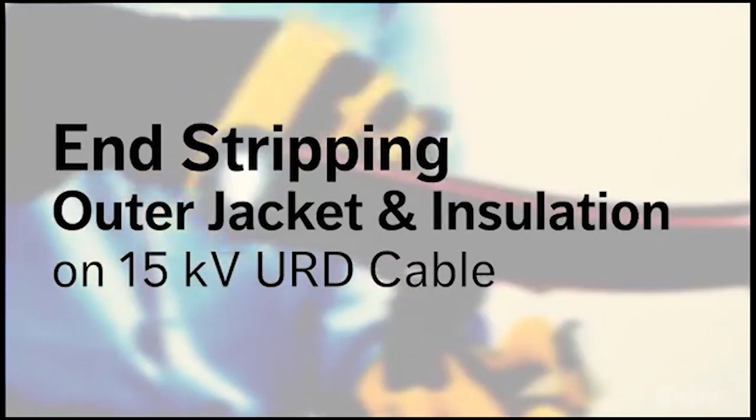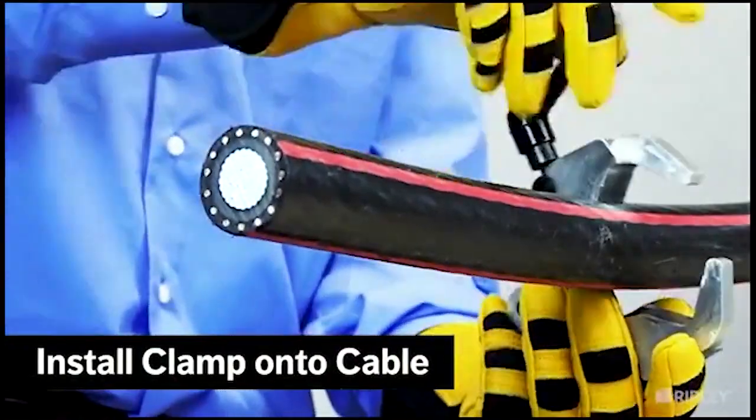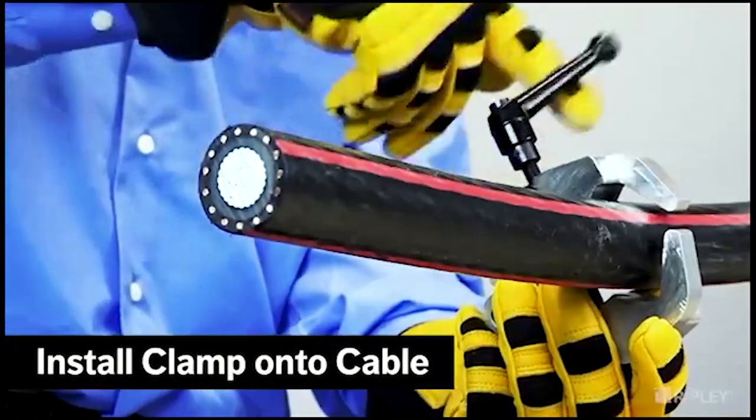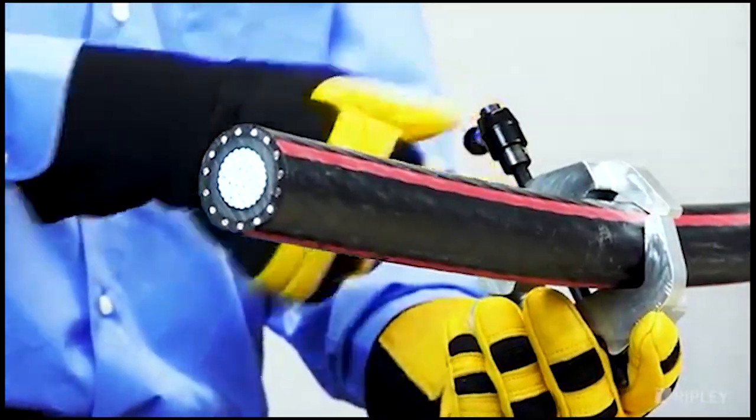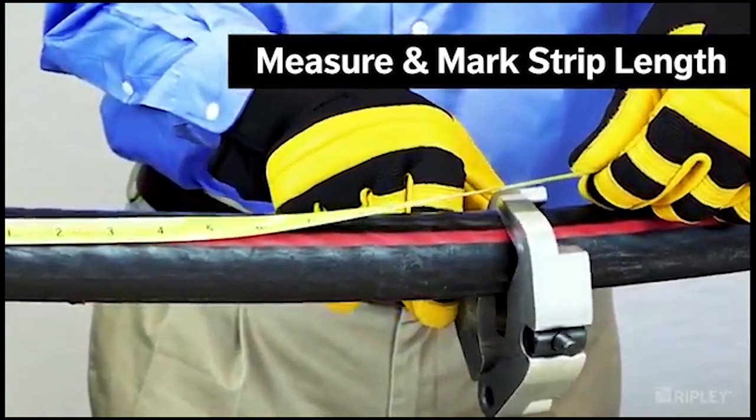To begin end stripping a medium voltage URD cable, place a clamp loosely around the cable for use as a strip stop. Measure and mark the desired strip length, then secure the clamp in place.